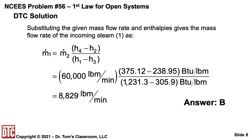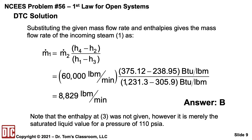Substituting all of these enthalpies into the expression, we have 60,000 pounds per minute for M2-dot, and then the difference in enthalpies H4 minus H2 divided by the difference H1 minus H3 gives about 8,829 pounds per minute, which is answer B. Note that the enthalpy at state 3 was not given; however, it's merely the saturated liquid value for a pressure of 110 psi.